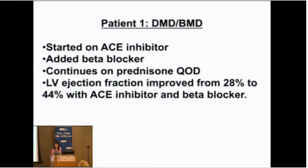We started him on an ACE inhibitor — that's the first-line medication we use — and added a beta blocker, the next most important medication. He continues on prednisone to this day. Prednisone is much more routinely used in Duchenne and much more rarely used in Becker patients, in part because it's been hard to study. His ejection fraction actually improved from 28% up to 44% just by adding those medications.